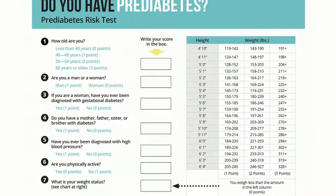The first question is: how old are you? Score yourself zero points if you're under 40, one point for ages 40 to 49, and your risk factor increases as your age increases. When we look at prediabetes, you're looking at modifiable versus non-modifiable risk factors — unfortunately, you cannot change your age.